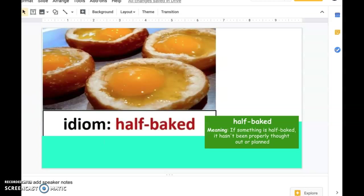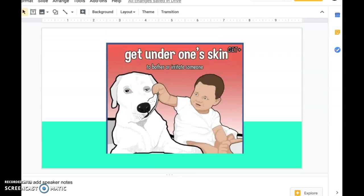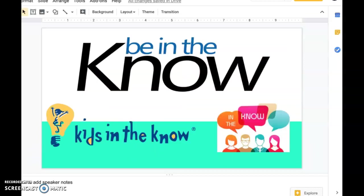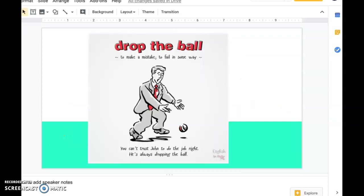Some other ones. Don't let the grass grow under your feet. That means to act now. Don't delay. If something is half-baked, so not fully cooked, it means that it hasn't been really planned very well. If you're getting under somebody's skin, that means you're bothering them. So if you tell your sibling, stop getting under my skin, it means stop bothering me. You should try to use some of these. A deadpan expression is somebody who doesn't show any expression. You can't really tell what they're thinking. To be in the know means you know what's going on. You have a lot of information. To drop the ball means to make a mistake. For example, you can't trust John to do the job. He's always dropping the ball. He never does anything right.